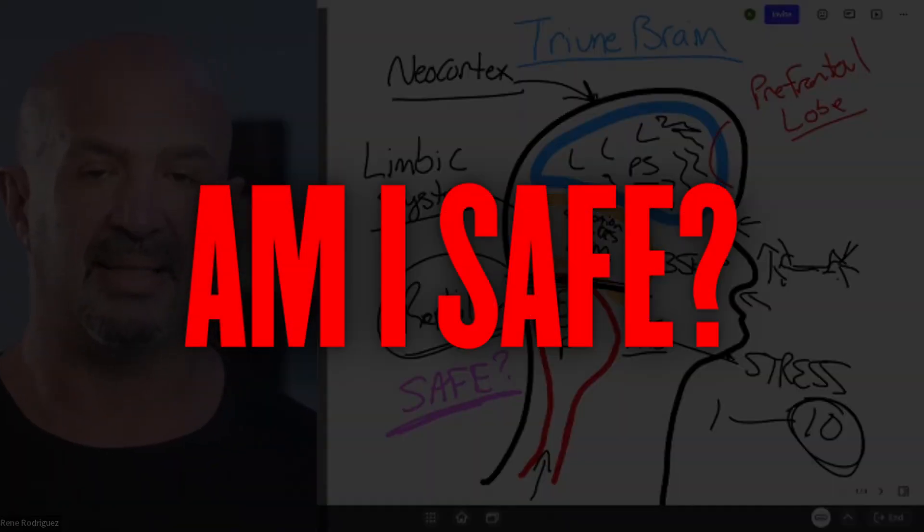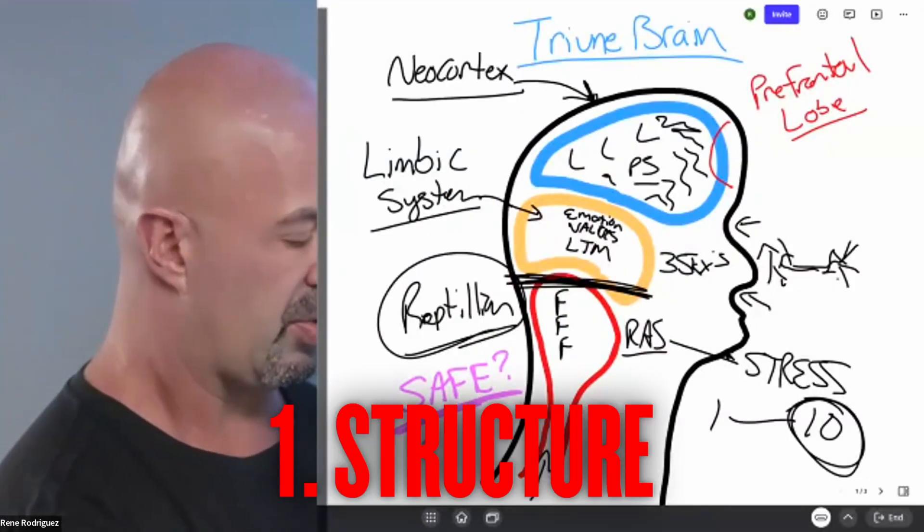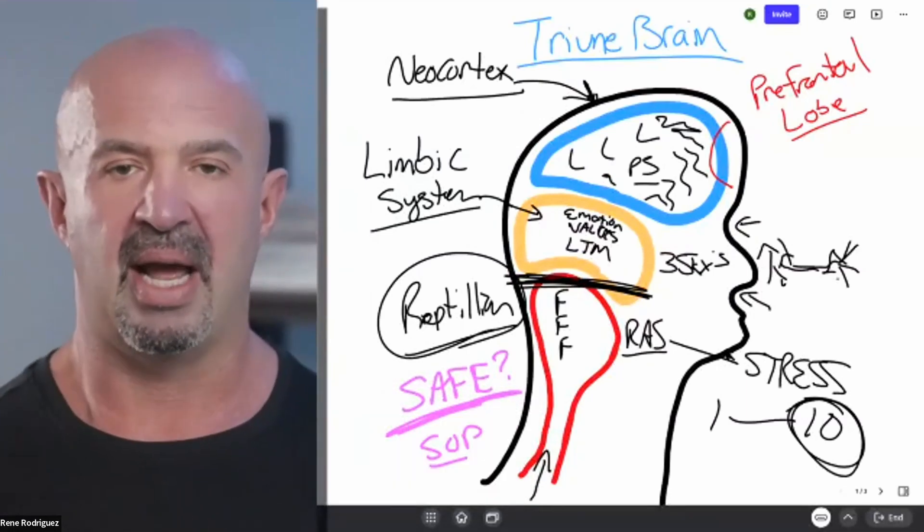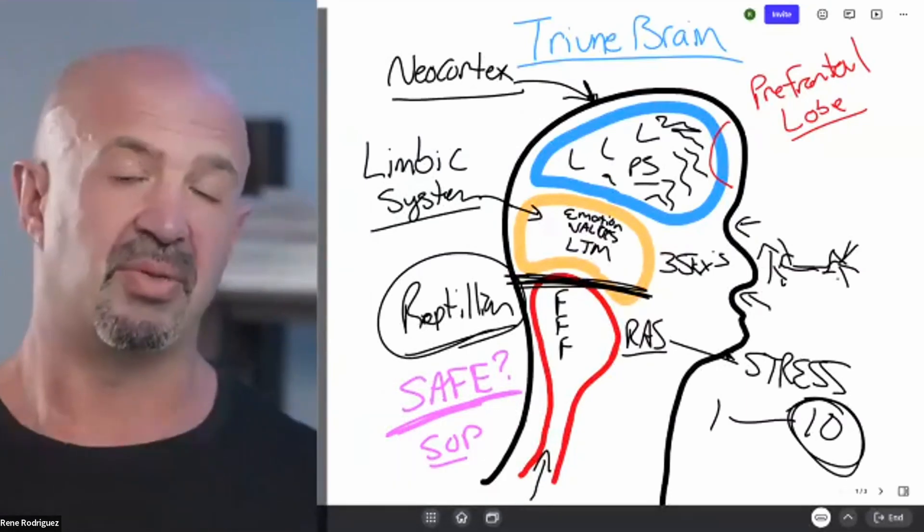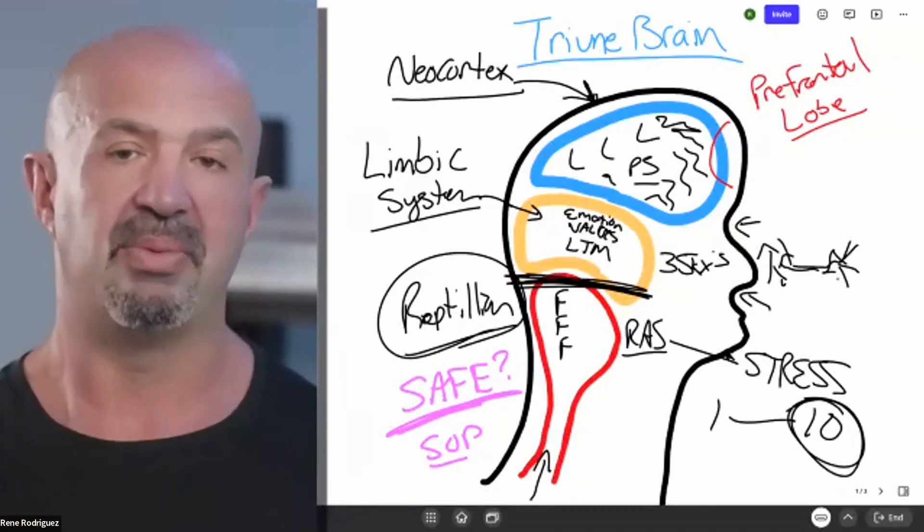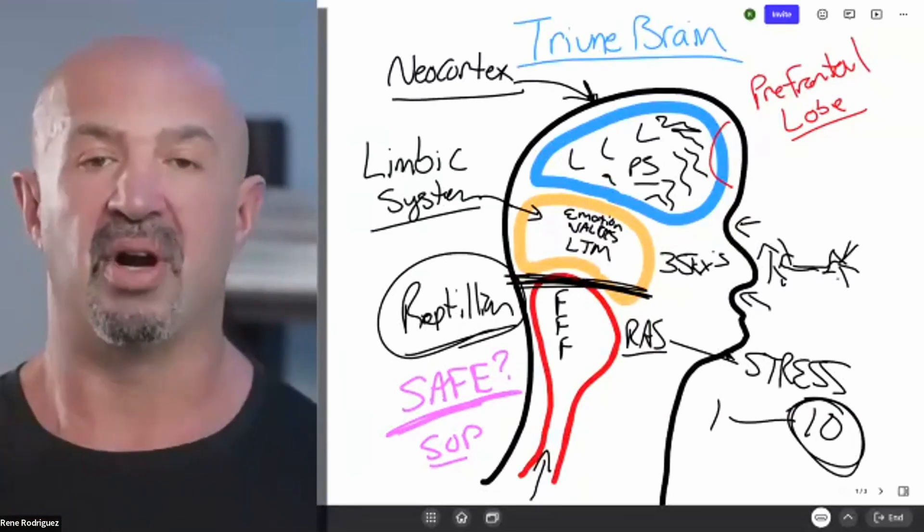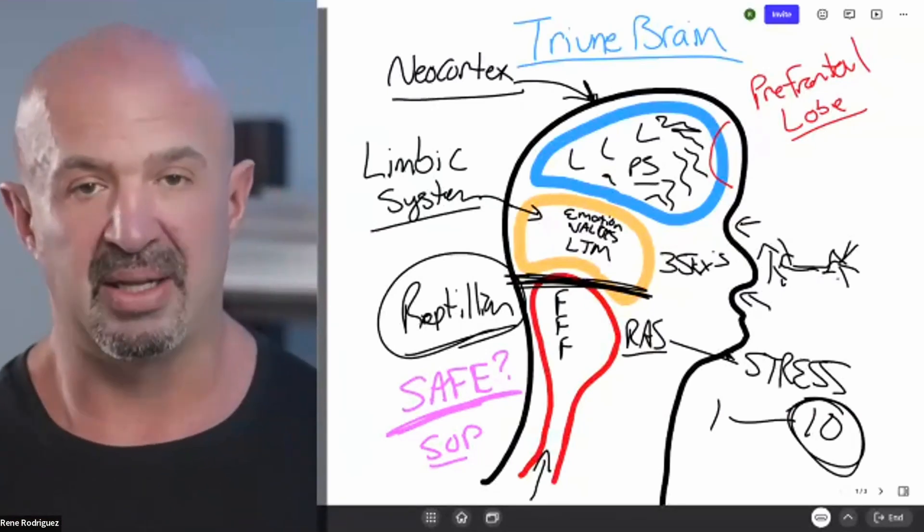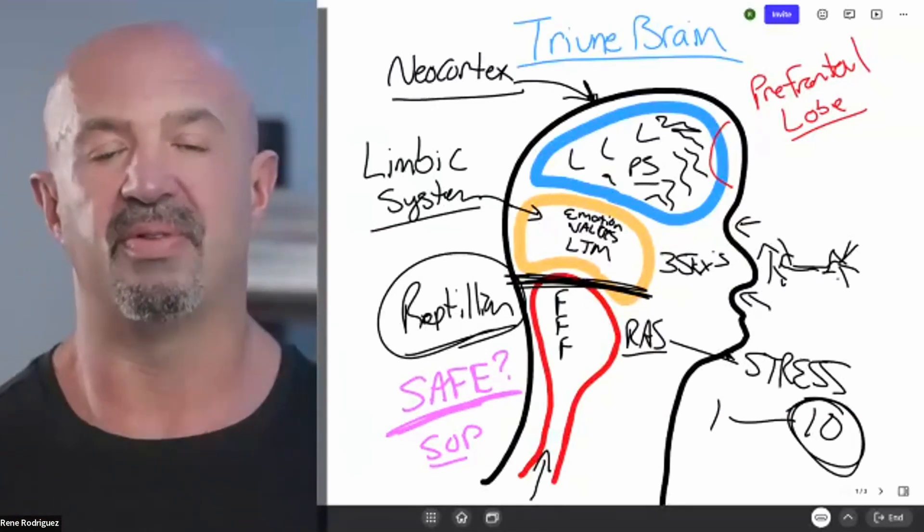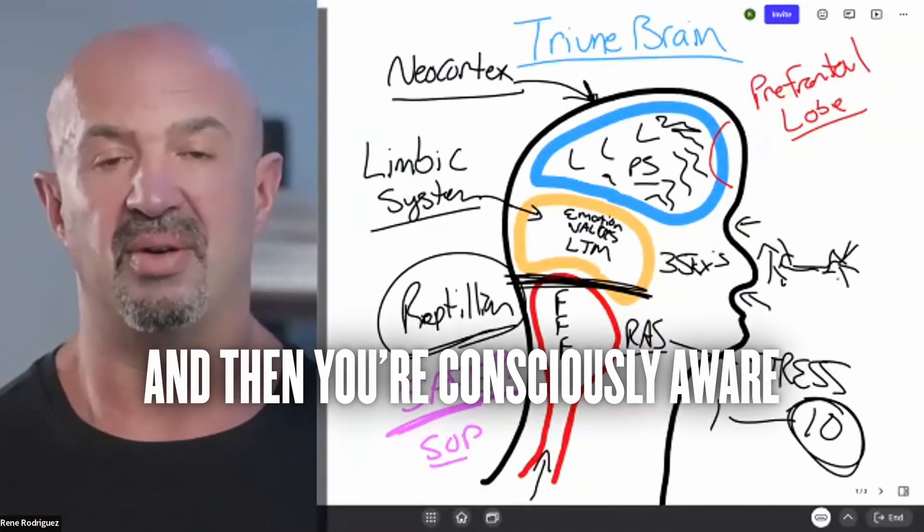The reptilian brain is very selfish and it asks the question, am I safe? Meaning three things, structure, order, predictability. Those are the things that really create safety. We're talking about psychological safety because this was designed for physical safety. That trumps everything else because your first goal of the brain is to survive and the reptilian brain is in charge of that. It hits all of your autonomic systems and your adrenaline.